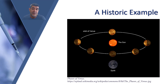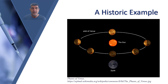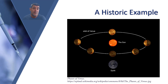Later, Galileo observed the phases of Venus, much like the phases of our moon. Aristotle had rejected the heliocentric model partly because he expected Venus's brightness would always be the same — fainter when on the far side of the sun and brighter on the near side. But Aristotle had no way of observing that Venus actually had phases. The figure shows the phases of Venus as viewed from Earth.